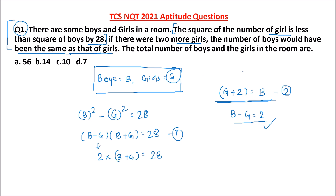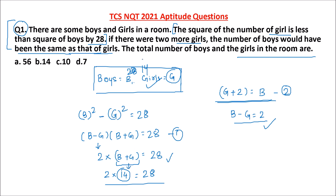What they are asking is the total number of boys and girls in the room. So what will be the value of B plus G such that this multiplication equals 28? If I put B minus G equals 2 and B plus G equals 14, then 2 into 14 equals 28. So the total number of boys and girls inside this room is 14. Option B is the correct answer.